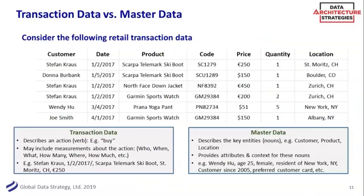Just more on definitions. The difference between transaction data and master data: master data is really your nouns. You have a lot of transactions around retail — Stefan bought a ski boot with a certain code and price at a certain time in St. Moritz. Those transactions themselves are not master data. Think of them as verbs — when did Stefan buy something, how much did he buy. The master data is the fact that your customer is Stefan Krauth. Those are really your nouns.